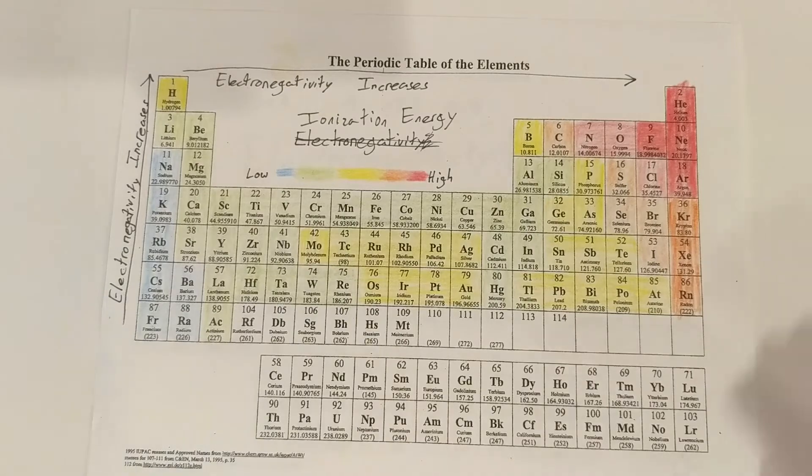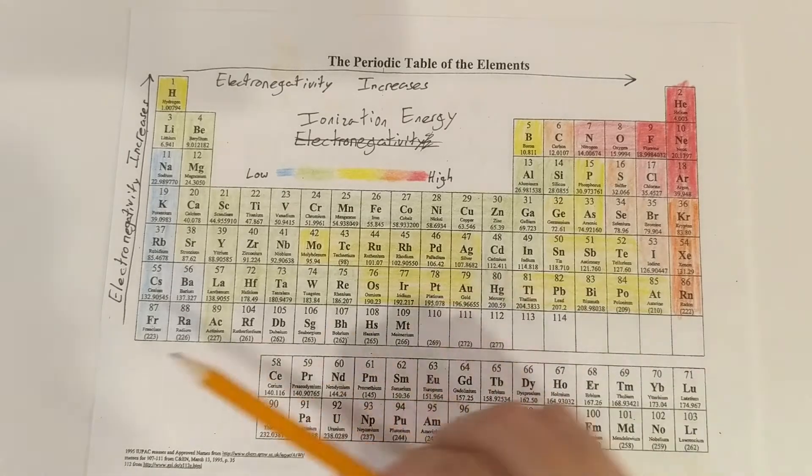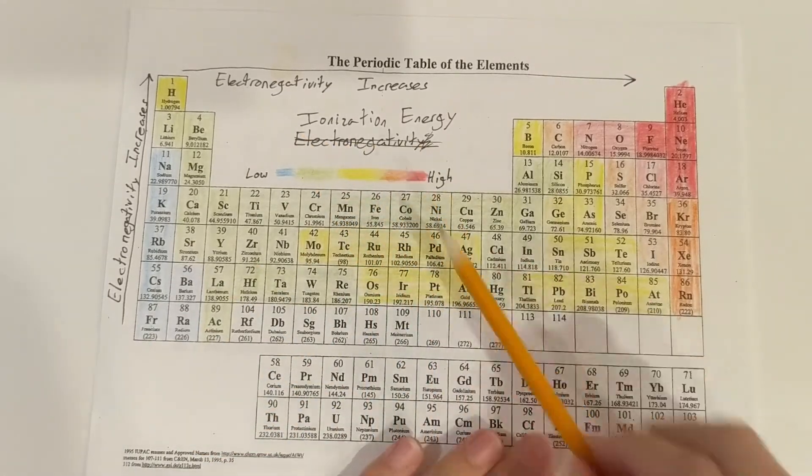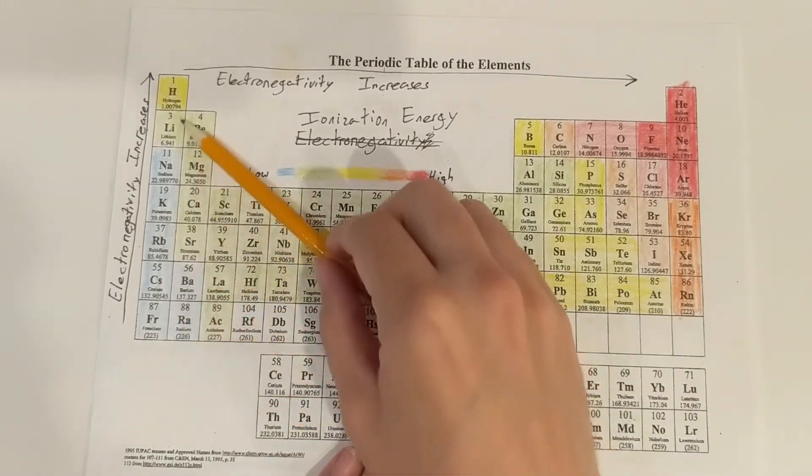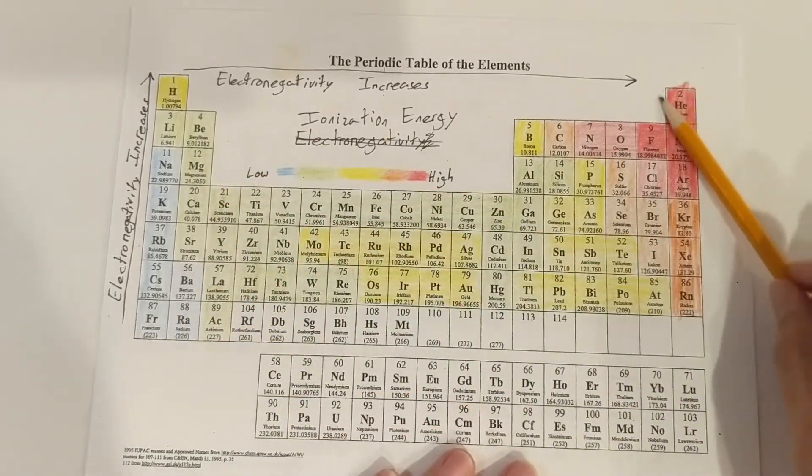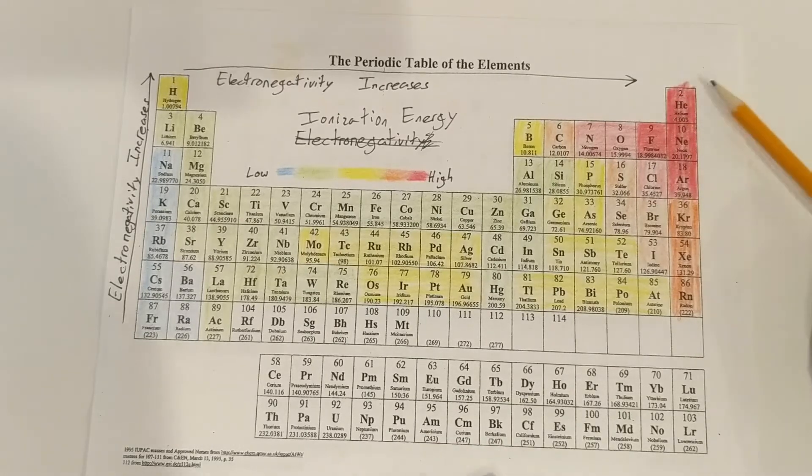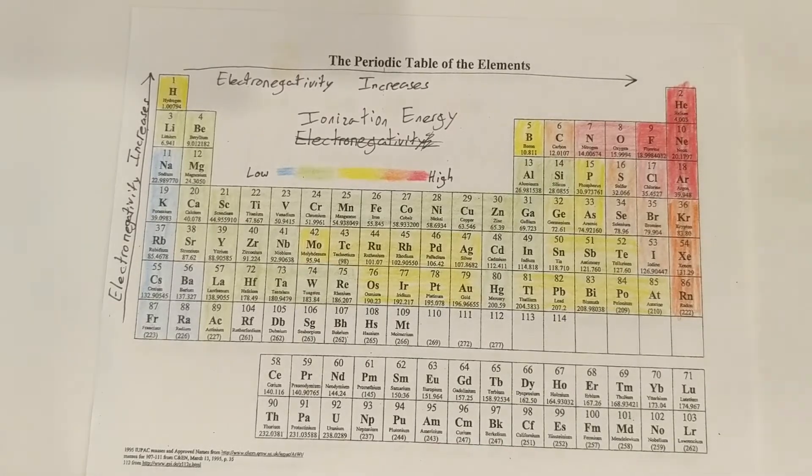So this is color coded in showing ionization energy and how ionization energy increases going up and to the right. And our element with the highest ionization energy is going to be helium.